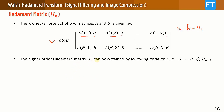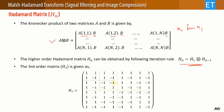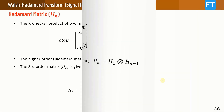Higher-order Hadamard matrices can be obtained with the same rule: H_N = H1 ⊗ H_{N-1}. The matrix H3, for example, is obtained as H1 ⊗ H2, resulting in an 8×8 matrix. This shows how we can generate a Hadamard matrix of any size.